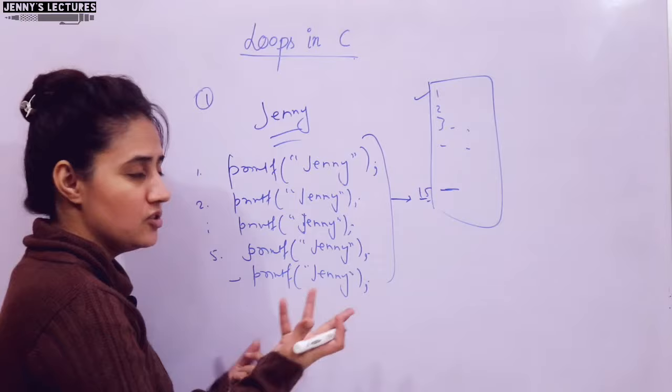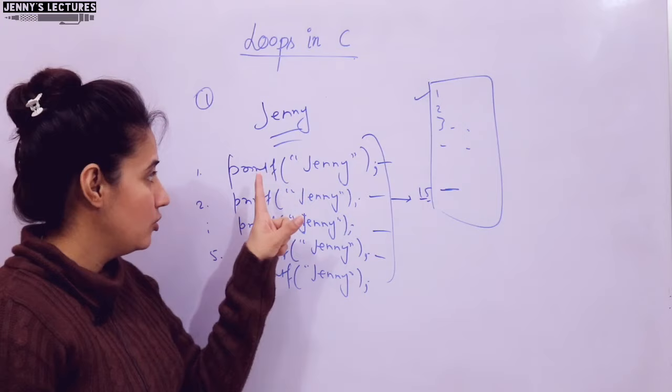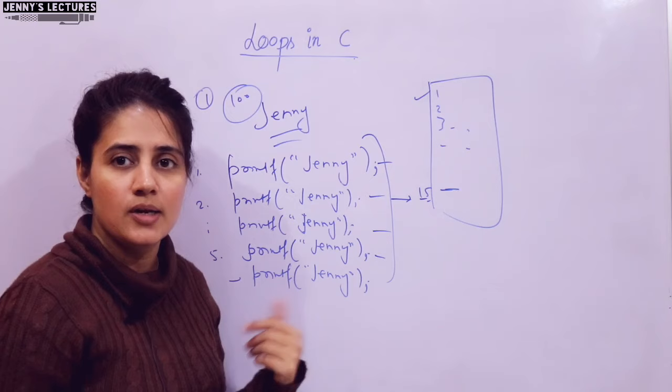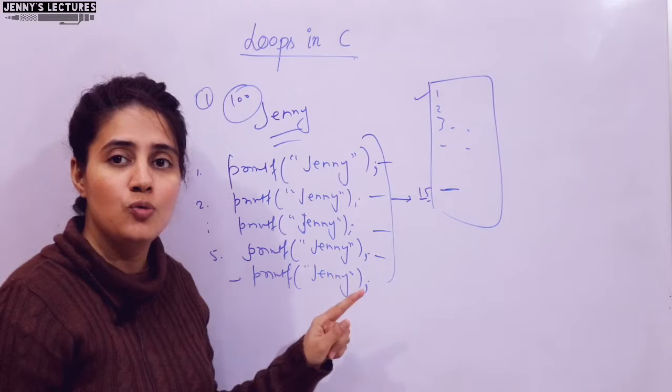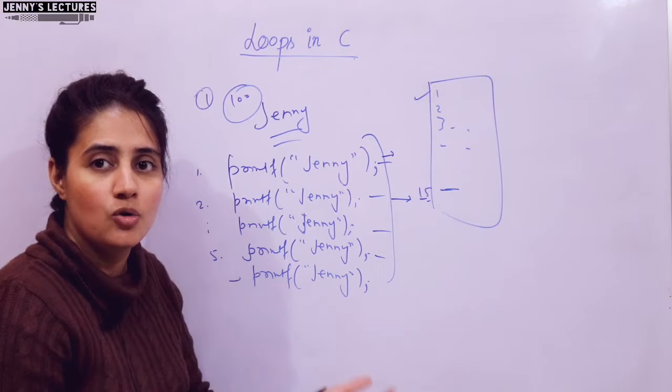You are repeating this statement — printf Jenny, printf Jenny — you are repeating. What you can do instead is just write a single printf statement, and suppose I want Jenny to be printed 100 times, then 100 times Jenny would be printed on your output screen. That's exactly what we can do with loops in C. This is what iteration — you are repeating this one statement again and again, suppose 100 times. This repetition of statements we can do with loops in C.